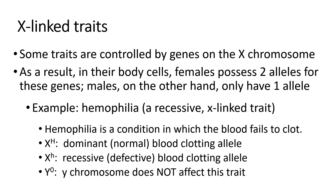Up to this point we've been talking about alleles on an autosome, meaning it didn't matter whether you're male or female — you had two copies of each allele. Now we're going to talk about X-linked traits — traits where the gene is found on the X chromosome. That means in a female's body cells she still has two alleles for these genes because females are XX. But males are XY, so males only get one copy — the Y doesn't have this gene — they only have one allele. An example of an X-linked trait is hemophilia, which is recessive and X-linked.